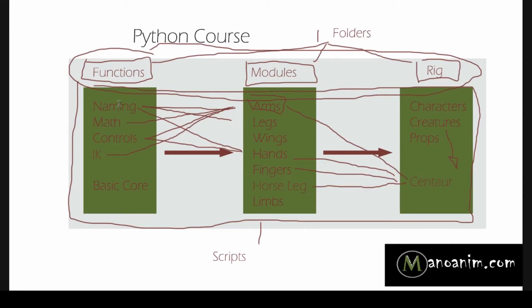Same thing with math. So I would have like one script called naming.py or something like that, so that Python. And then I would have a math module where we maybe have some vector math, we can have some power math, we can have any kind of math that we kind of need. And then we have a control.